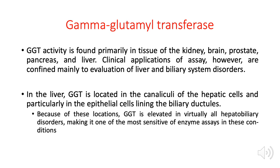GGT tissue sources include the kidney, brain, prostate, pancreas, and liver — particularly in the bile canaliculi of hepatic cells. Since it is found in the pancreas, it can be elevated in acute pancreatitis, but the preferred analytes for diagnosing acute pancreatitis are amylase and lipase. The most important tissue source to memorize is the bile canaliculi of hepatic cells, so expect GGT to be elevated in cases of bile duct obstruction.